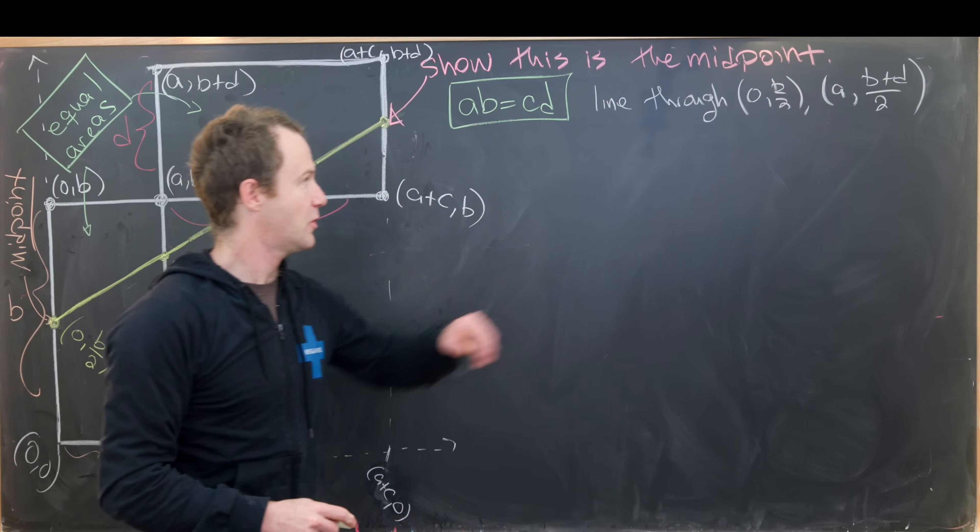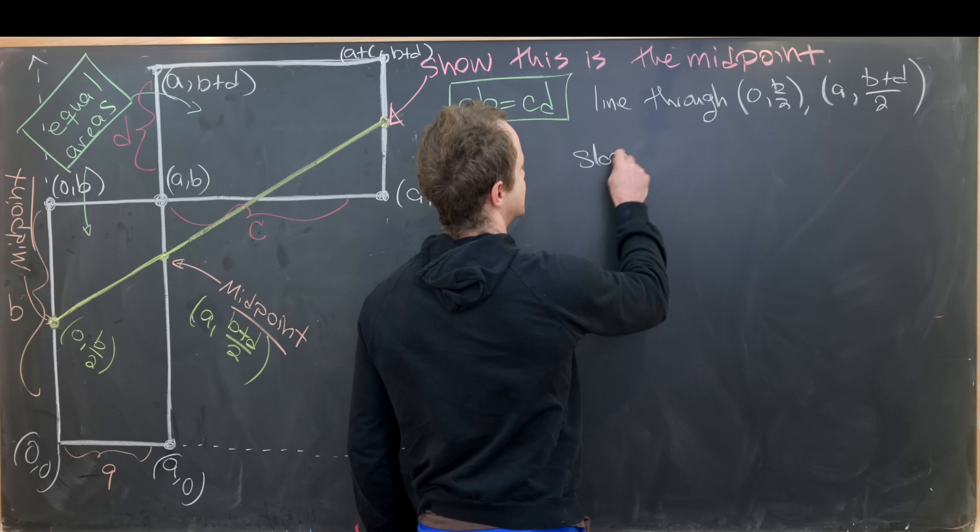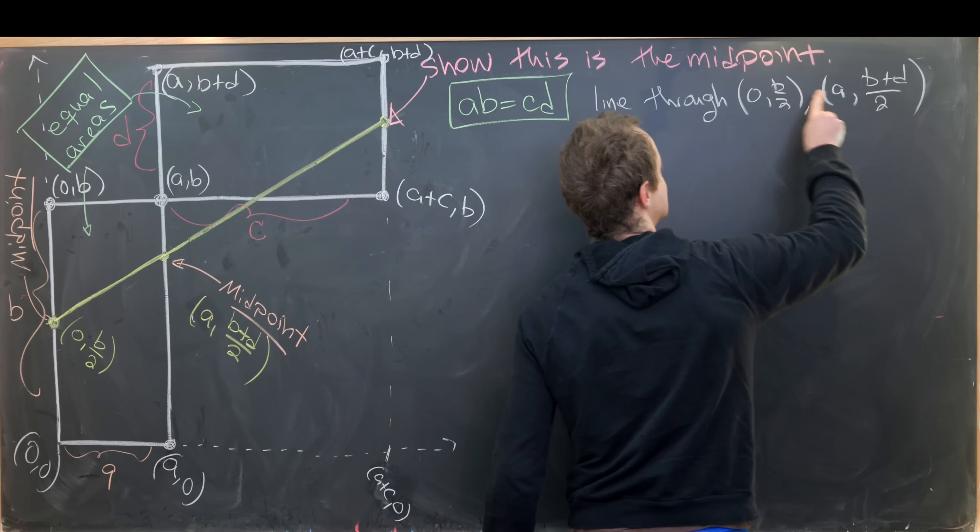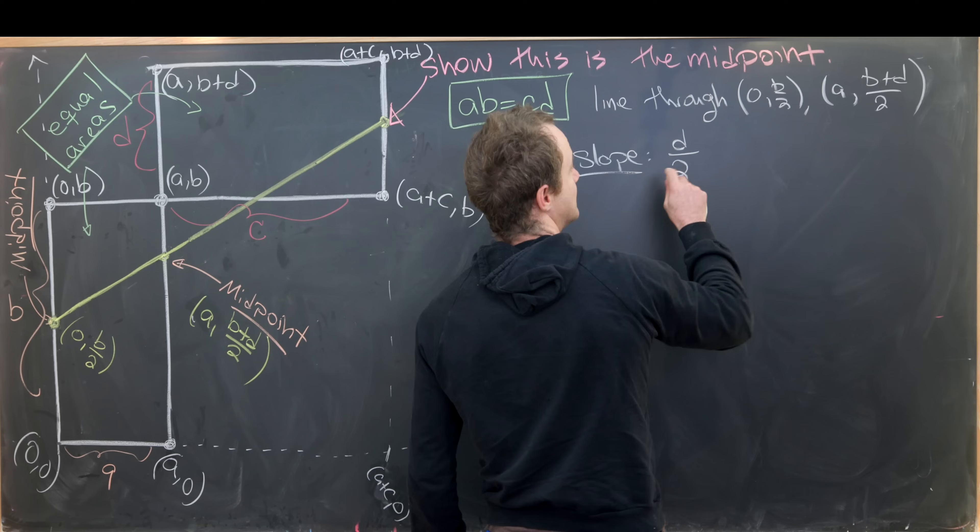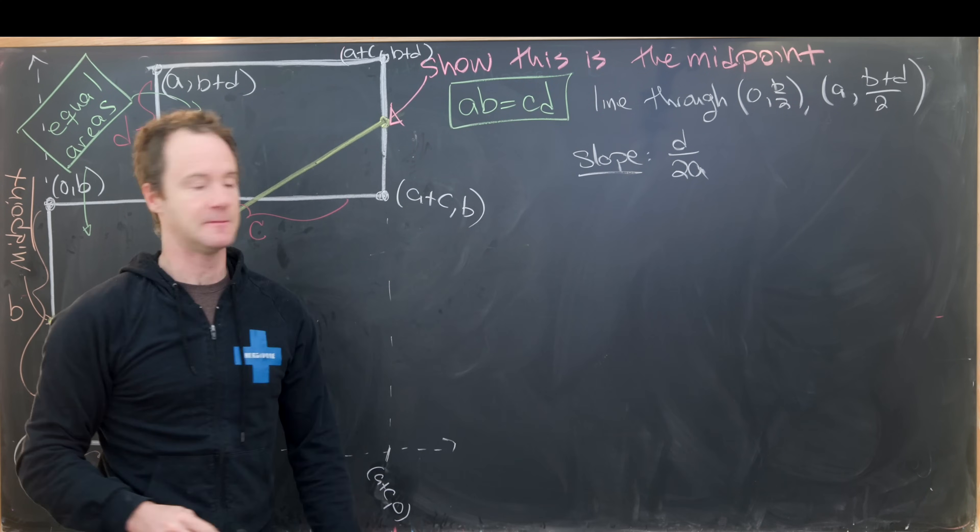So that means we need the slope. We already have the y-intercept. Notice our slope will be change of y over change of x. So we need to subtract these two numbers. Notice subtracting these two numbers will give us d/2, and then dividing by this number will give us d/(2a).